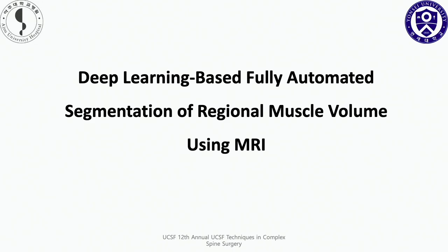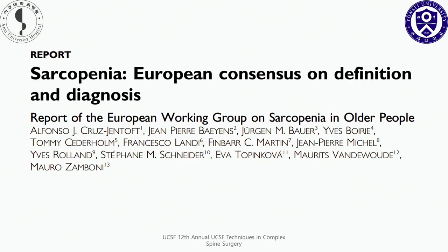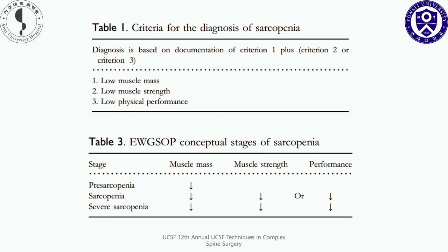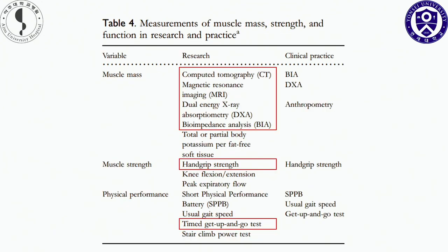The second topic is deep learning-based automated segmentation of regional muscle volume using MRI. The European Working Group on Sarcopenia reported the European consensus on definition and diagnosis of sarcopenia. They reported criteria for diagnosis: low muscle mass, low muscle strength, and low physical performance, dividing cases into pre-sarcopenia, sarcopenia, and severe sarcopenia. They recommend CT, MRI, DEXA, and BIA for muscle mass assessment.